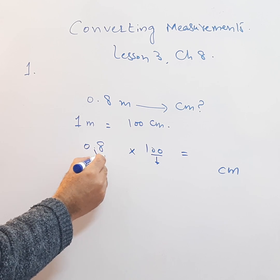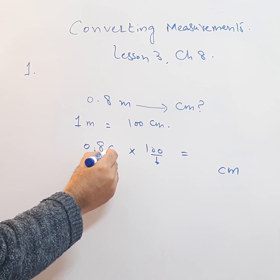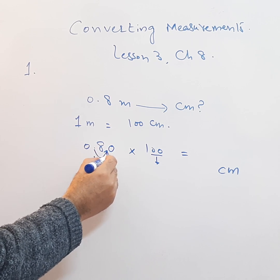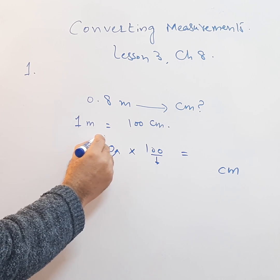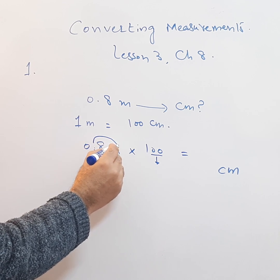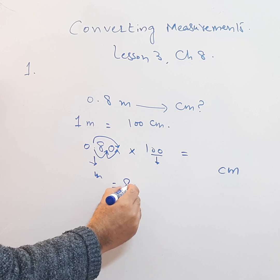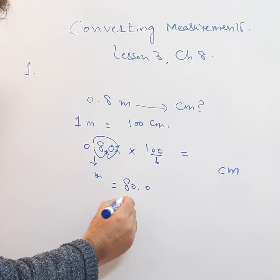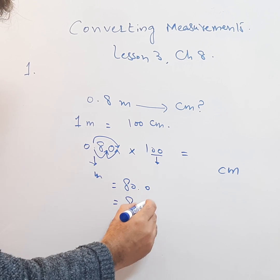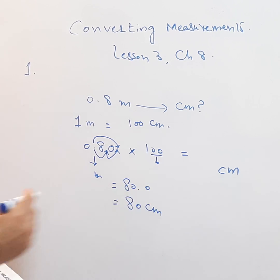This is 1 time, then put 0 here, and this is 2 times. So this decimal will come here — it becomes 80.0. 80.0 is 80. So 80 centimeters is the answer.